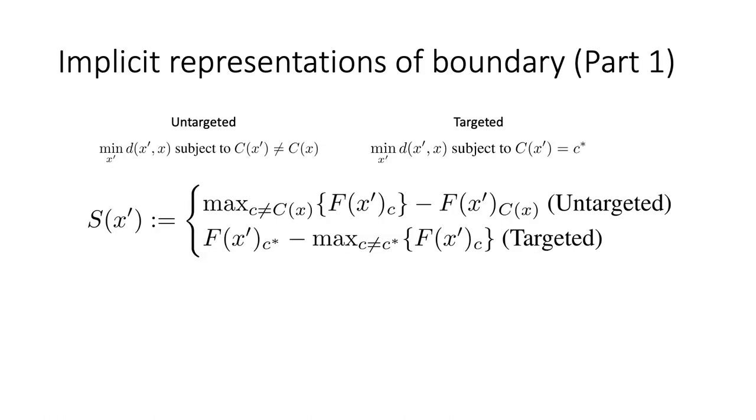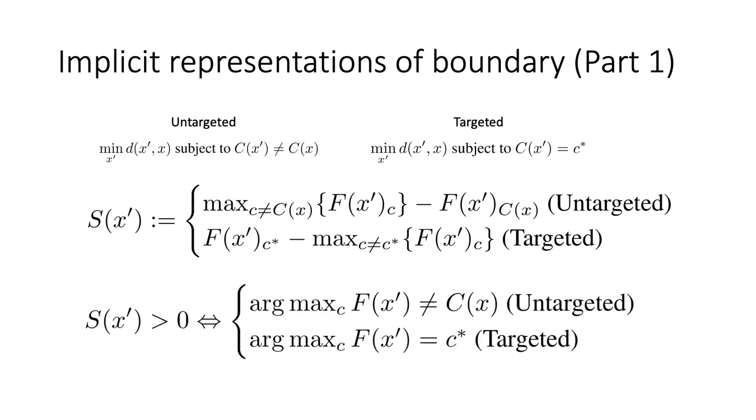Before we go into details of the algorithm, we first define an important concept, the boundary of untargeted and targeted objectives respectively. In the untargeted setting, the boundary function S is defined as the maximum probability of the rest of the classes minus the probability of the original class. In the targeted setting, the boundary function is defined as the probability of the target class minus the maximum probability of the rest of the classes. The definition of S implies S is larger than zero if and only if the model achieves maximum probability at a wrong class in untargeted setting and at the target class at the targeted setting.